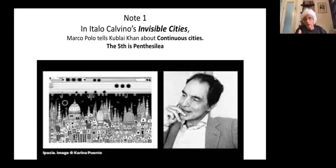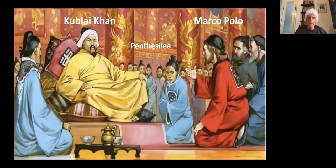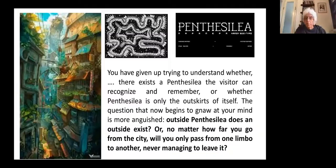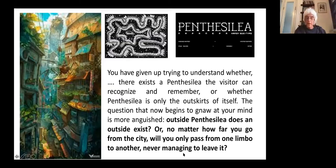Here you can see Marco Polo on the right, Kublai Khan on the left, and Marco Polo is talking about Pentacillia. It says: 'You have given up trying to understand whether there exists Pentacillia the visitor can recognize and remember, or whether Pentacillia is only an outskirt of itself. The question that now begins to gnaw at your mind is most anguishing — outside Pentacillia doesn't always exist. No matter how far you go from the city, will you only pass from one limbo to the other, never managing to leave it.'